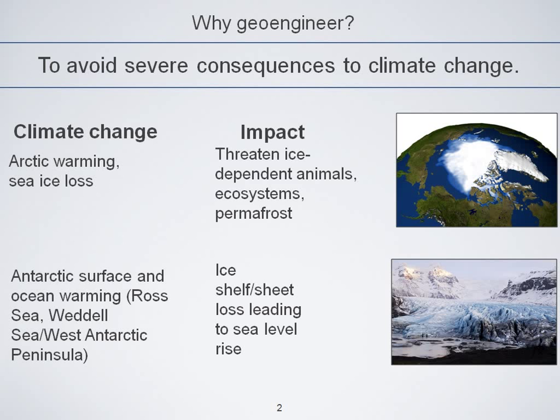On the other side of the globe, Antarctic surface warming and ocean warming can have implications for ice shelf and ice sheet melt, which would lead to sea level rise. I'm focusing on the poles because the poles are the most sensitive part of the globe in terms of climate change, and especially in the Arctic, it's projected to warm more than the global mean. There are other severe consequences I could mention, like warming of the tropics that would lead to food security problems, but I'm just going to talk about the poles today.